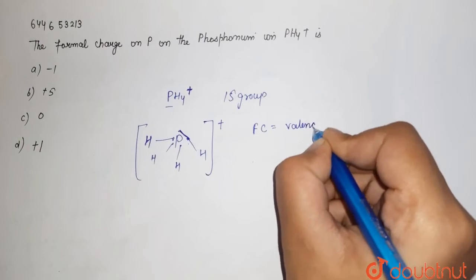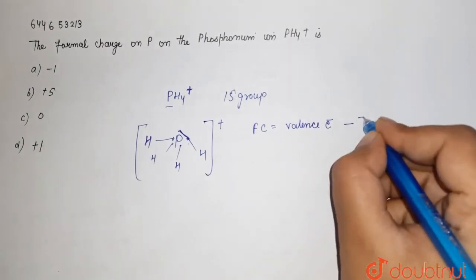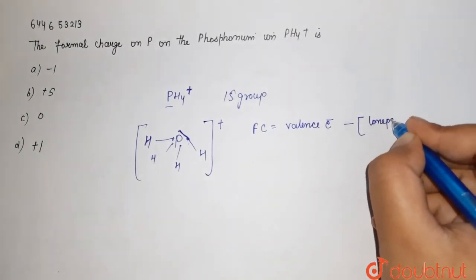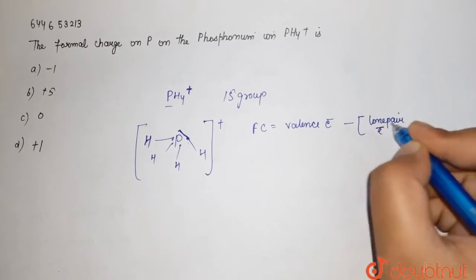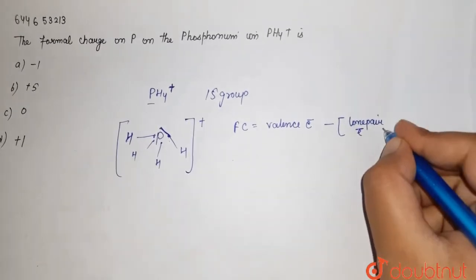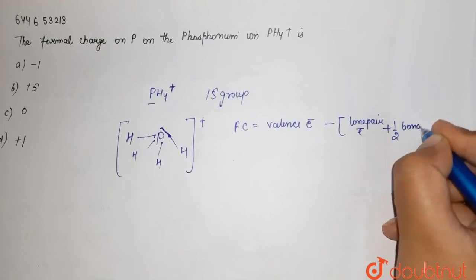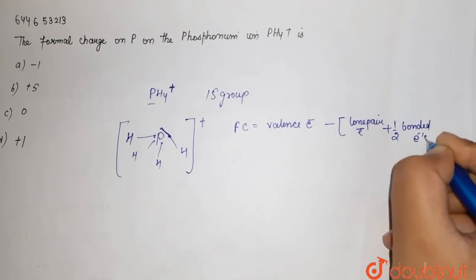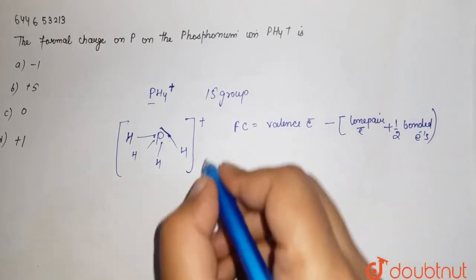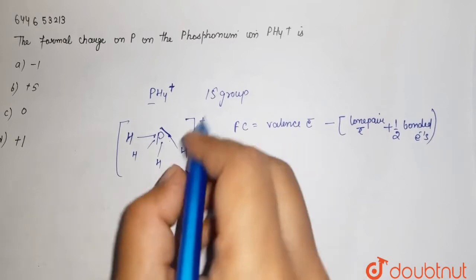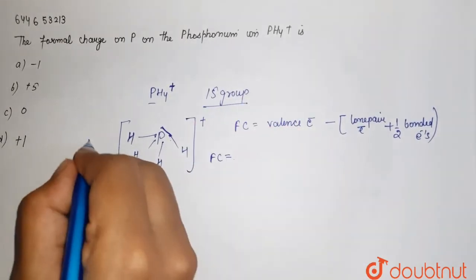If you see it over here, valence electrons - because it belongs to group 15, here it is nitrogen, phosphorus, arsenic - so this is how your group 15 elements are. So it is 5 minus...